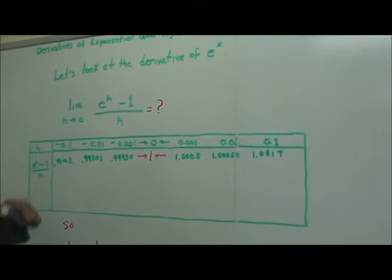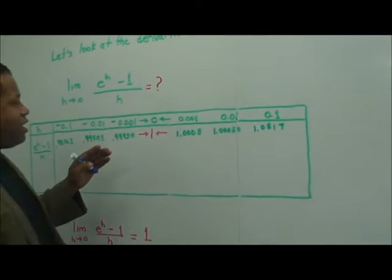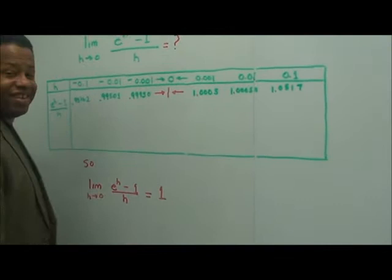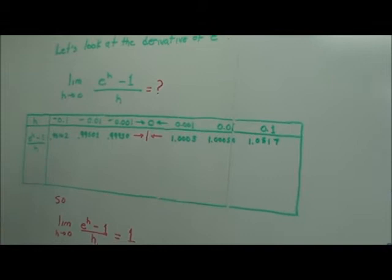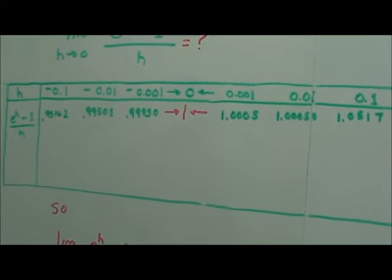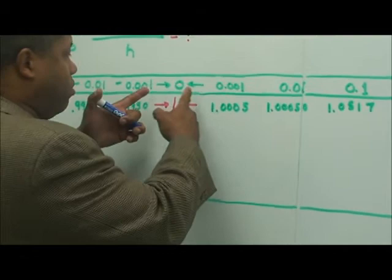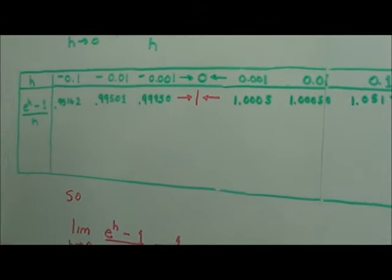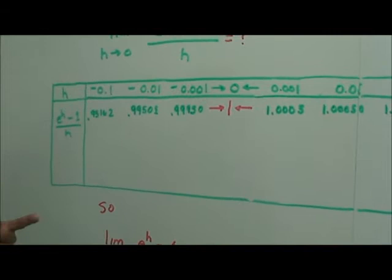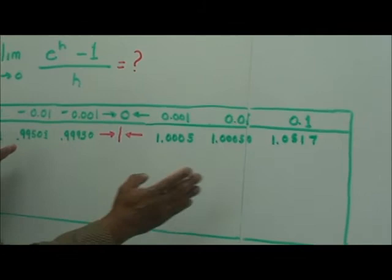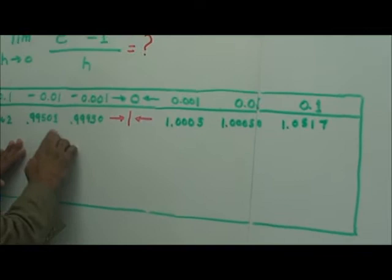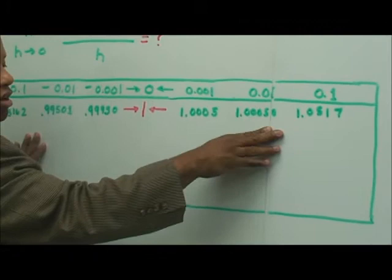We have some values here. We want to test what this limit equals. We put in values: negative 0.1, negative 0.01, negative 0.001, and then approaching from the positive side: 0.001, 0.01, and 0.1. When we plug those values in and look at the outputs, we notice this thing is getting closer and closer to 1.